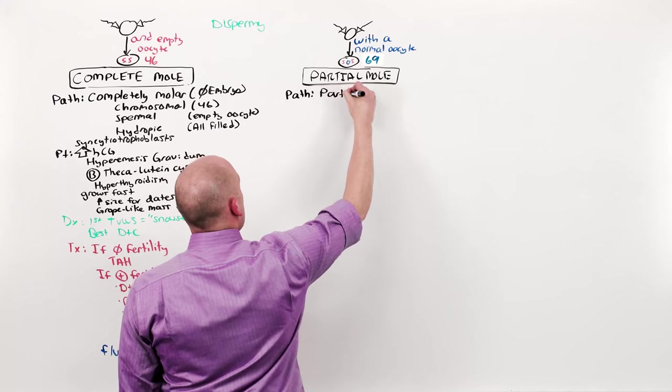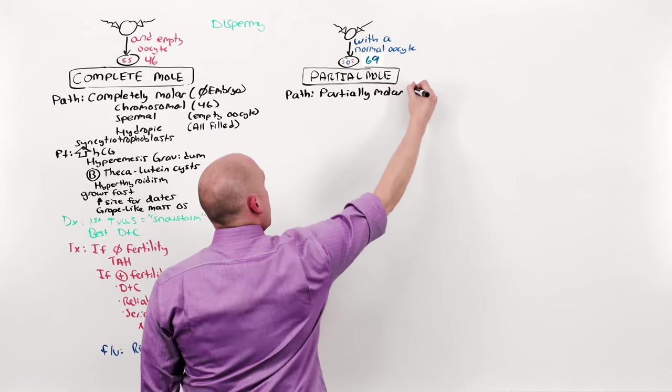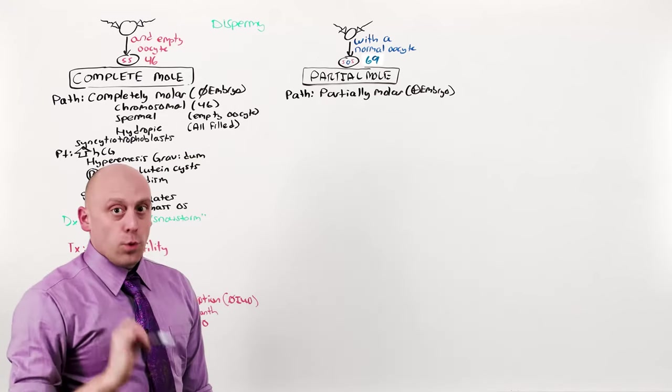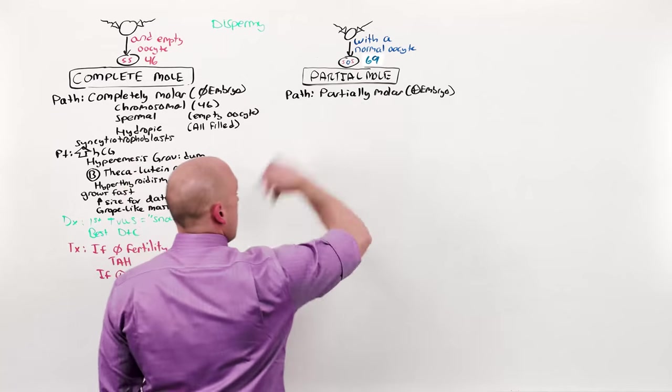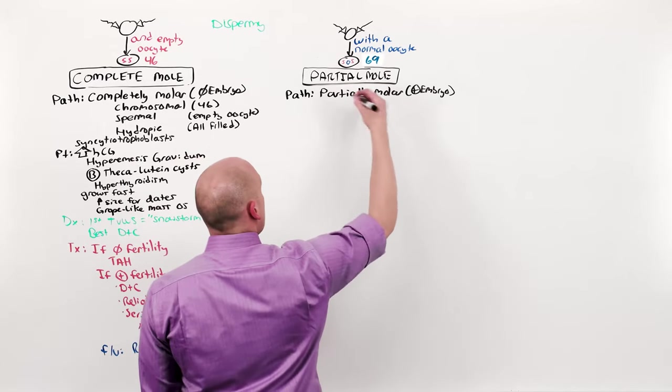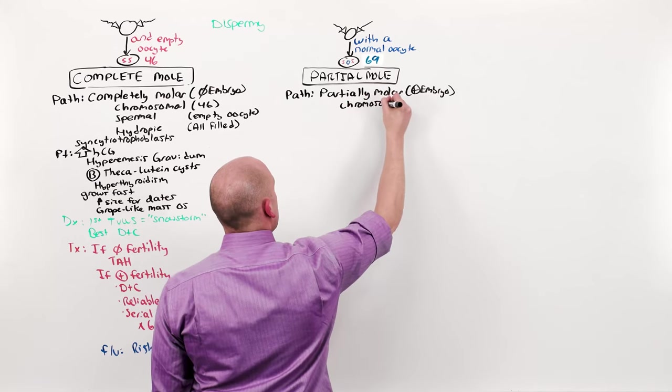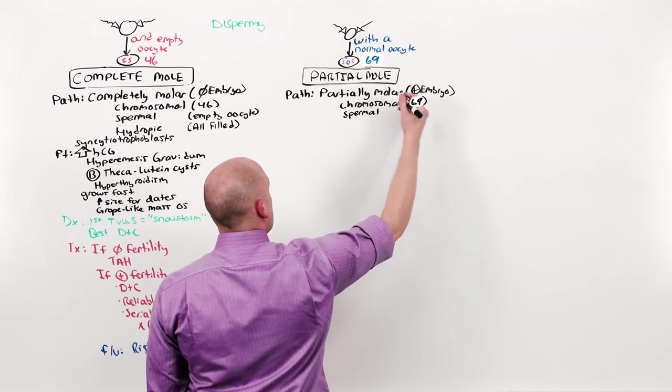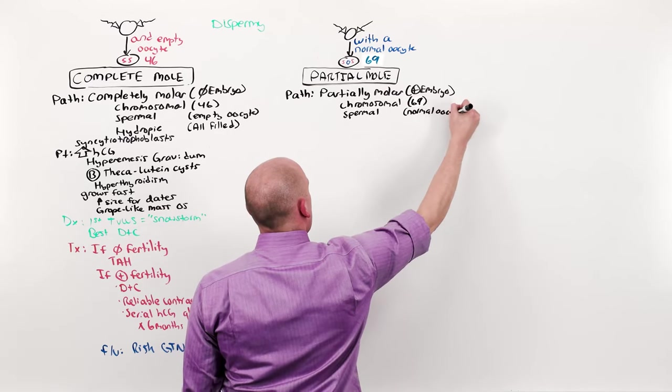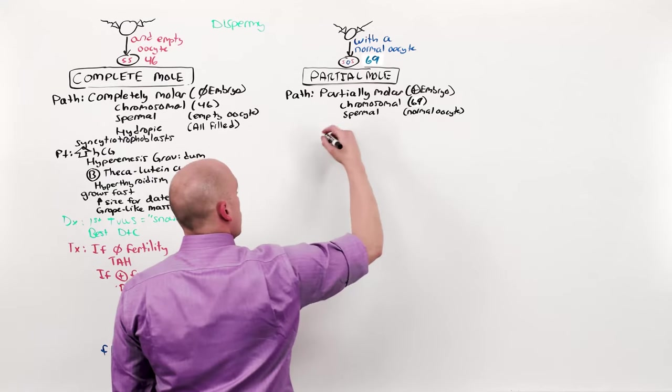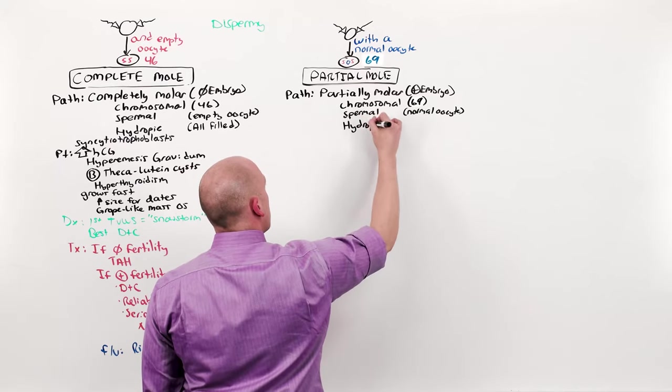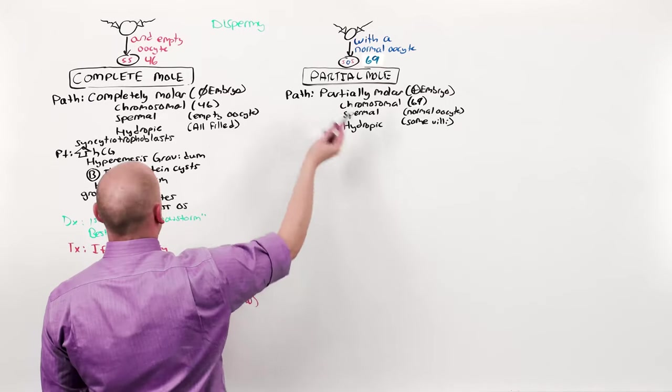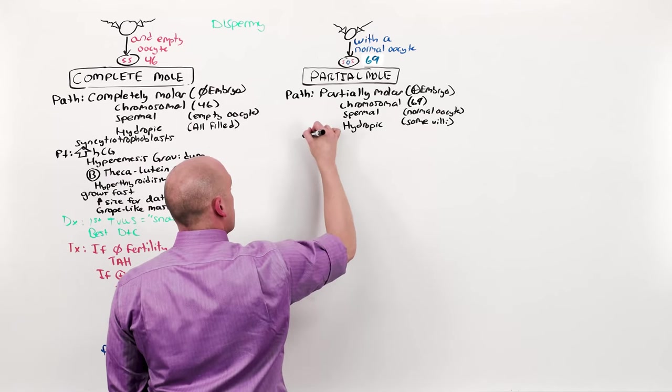It is only partially molar. Which means there can be an embryo. And even a heartbeat. But this is a triploid embryo. It will abort. You cannot save it. And this has to come out. Otherwise it will kill mom. It is partially chromosomal. It has an abnormal number of chromosomes. 69. It is partially spermal. That is because the oocyte is normal. And on gross, it will only be partially hydropic. So not all, only some of the villi are engorged. And most importantly, the opposite of complete mole is that the cells are the cytotrophoblasts.